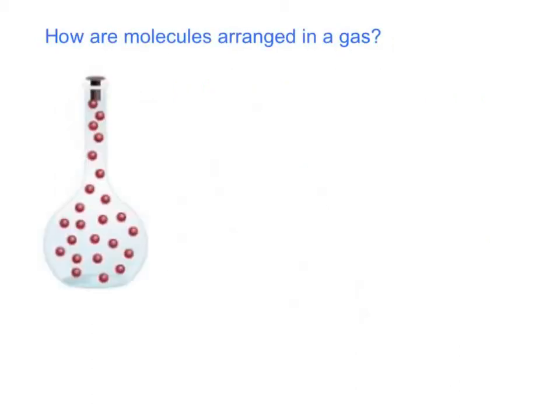Now let's look at a gas. How are molecules arranged in a gas? In this picture, you can see that they're far apart. They're not in any organized pattern. They're just sort of all over the place. And even though you can't see it, they're moving at high speeds.